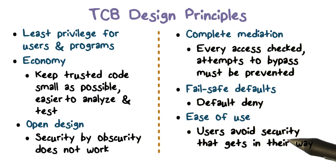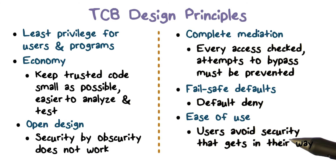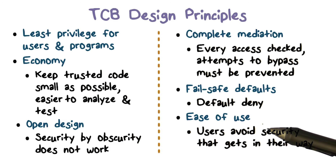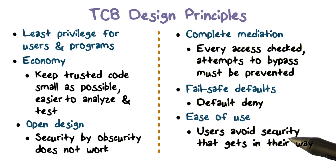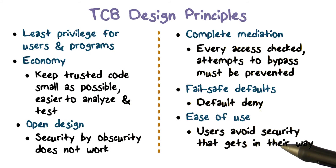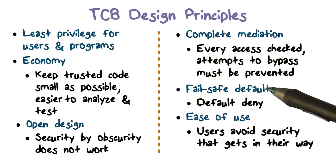Finally, ease of use or psychological acceptability. Basically, we have to make the right assumptions about what users are able to do and what they're not able to do. If we make assumptions about users that are unreasonable, they're going to avoid security that gets in their way. They're going to find ways to work around it, and that's going to result in a lower level of trust.